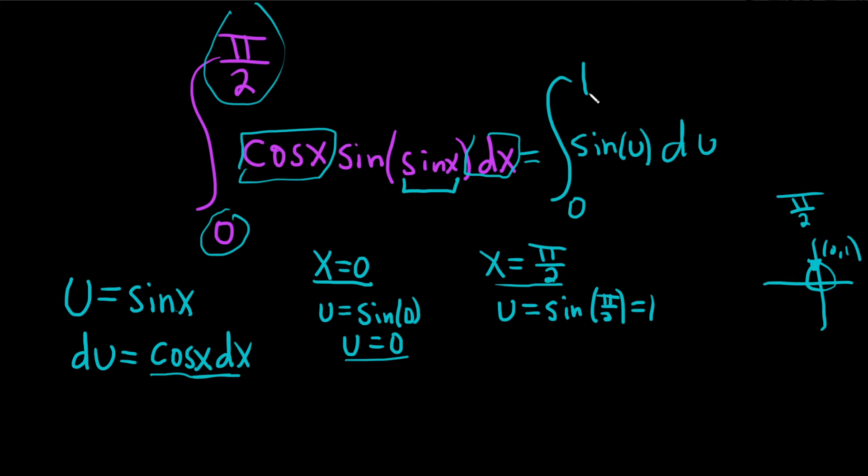And so we just have to work this out. So not so bad. So what happens when you integrate sine? Well, the derivative of cosine is negative sine, so we're going backwards. So when you integrate sine, you get negative cosine of u. And we're going from 0 to 1.